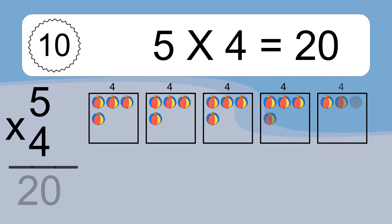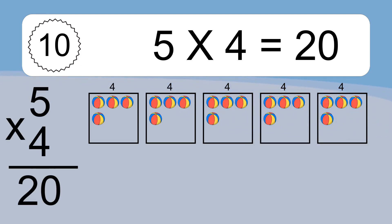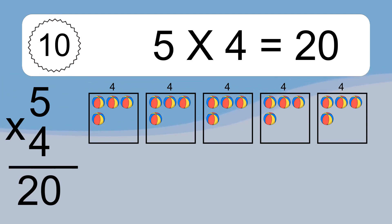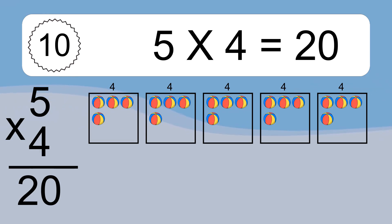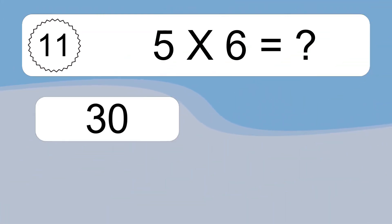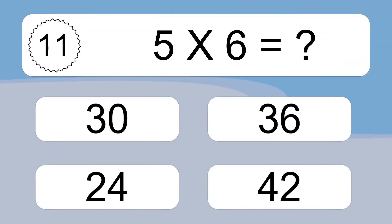5 times 4 equals what? Five times four equals twenty. We have five boxes and each box has four colorful balls inside. If you count all the balls in all the boxes together, you will have five times four balls. This equals twenty balls.